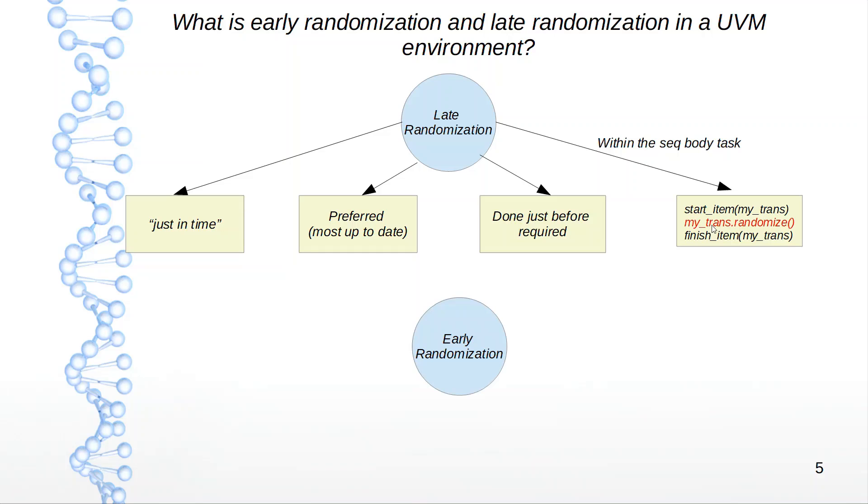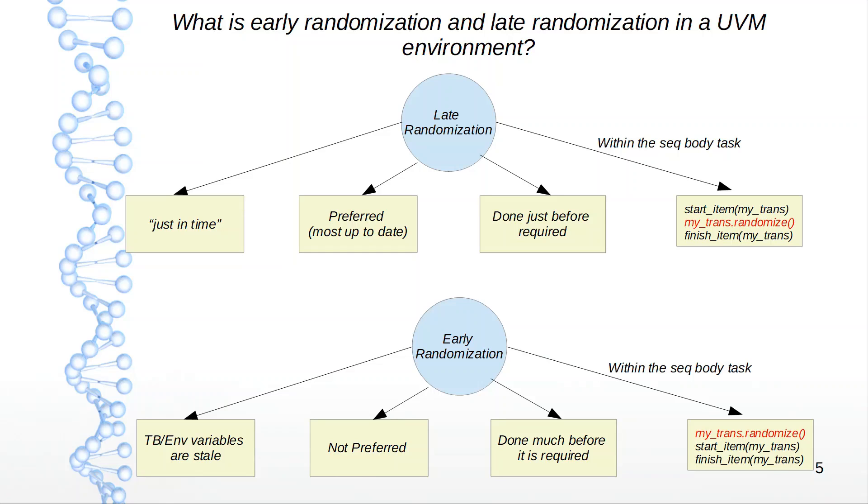Early randomization, on the other hand—the testbench environment variables are essentially going to be stale. Your randomization happens way ahead of time. It's not really preferred. The difference is you're randomizing first and then calling a blocking call, and who knows when you're going to get access to the sequencer.